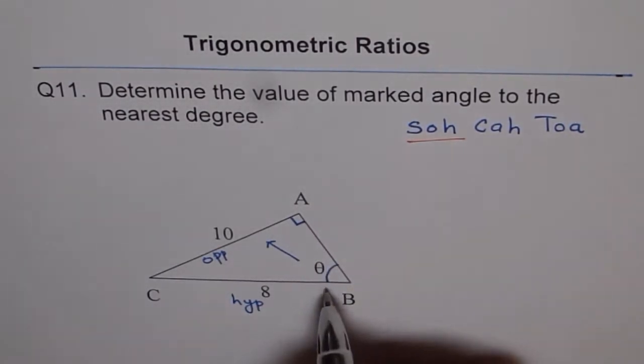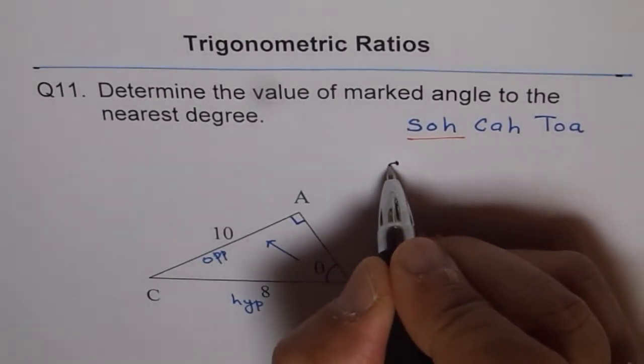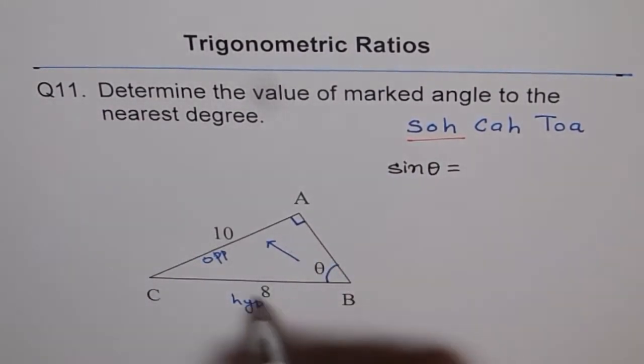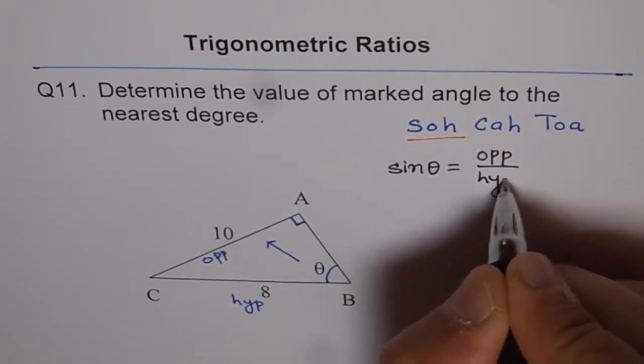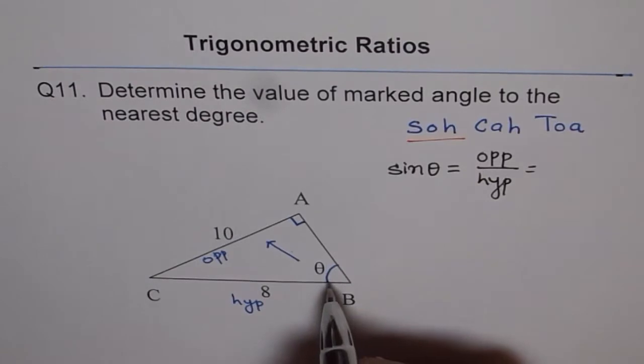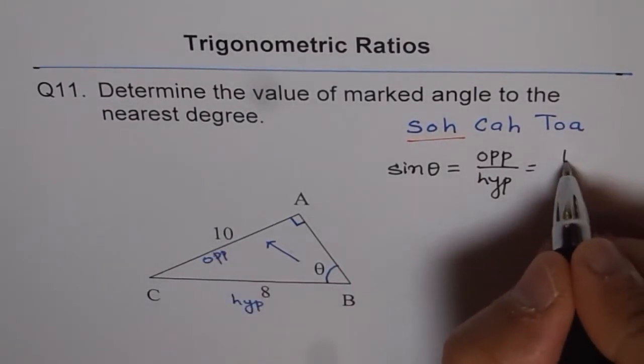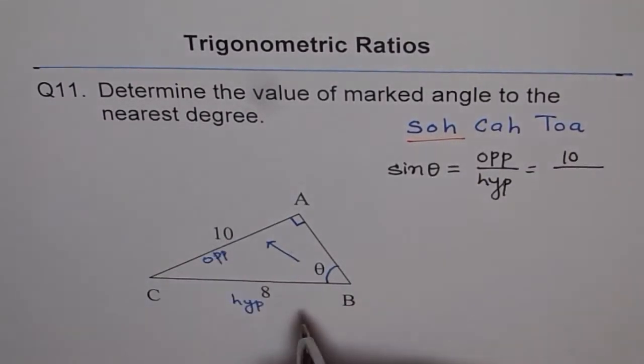So sine of theta will solve this problem. We will use sine theta equals opposite over hypotenuse. The opposite side to theta is 10, and hypotenuse should be greater.